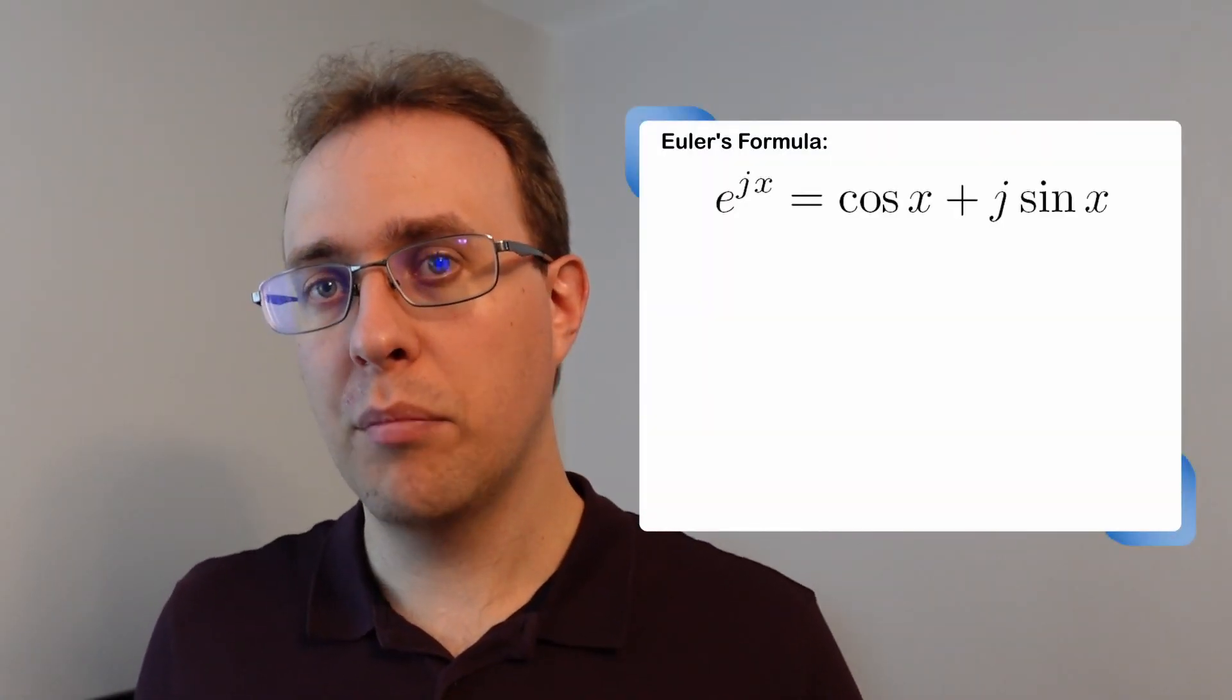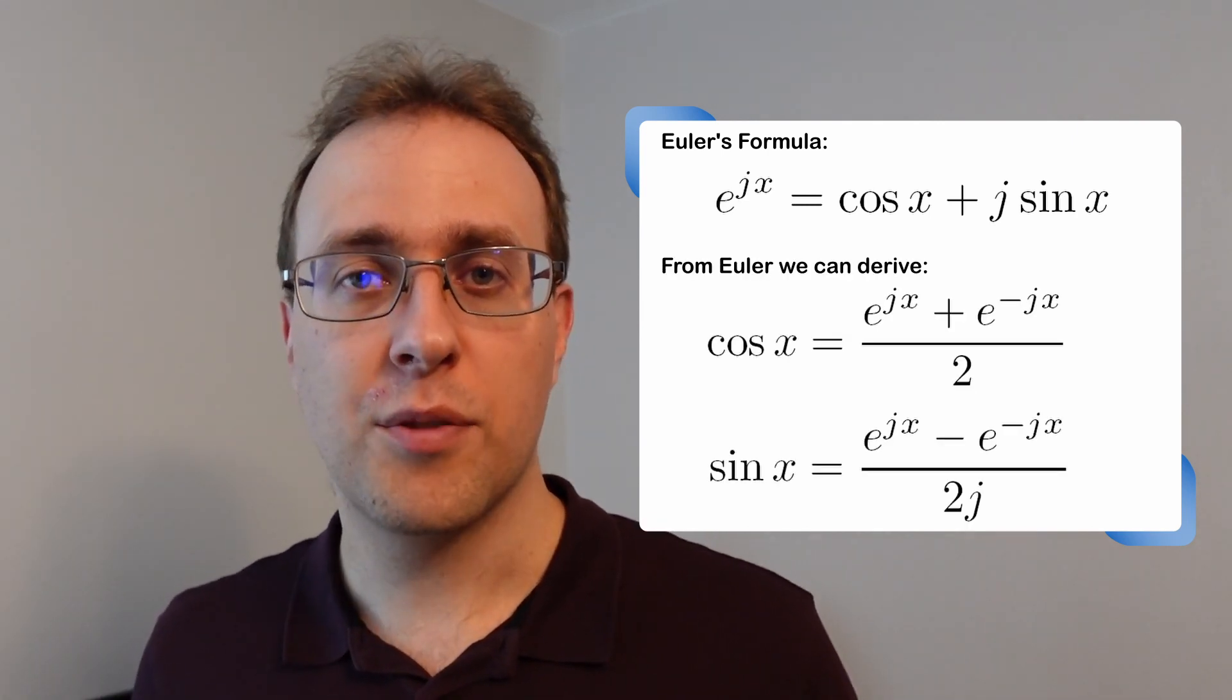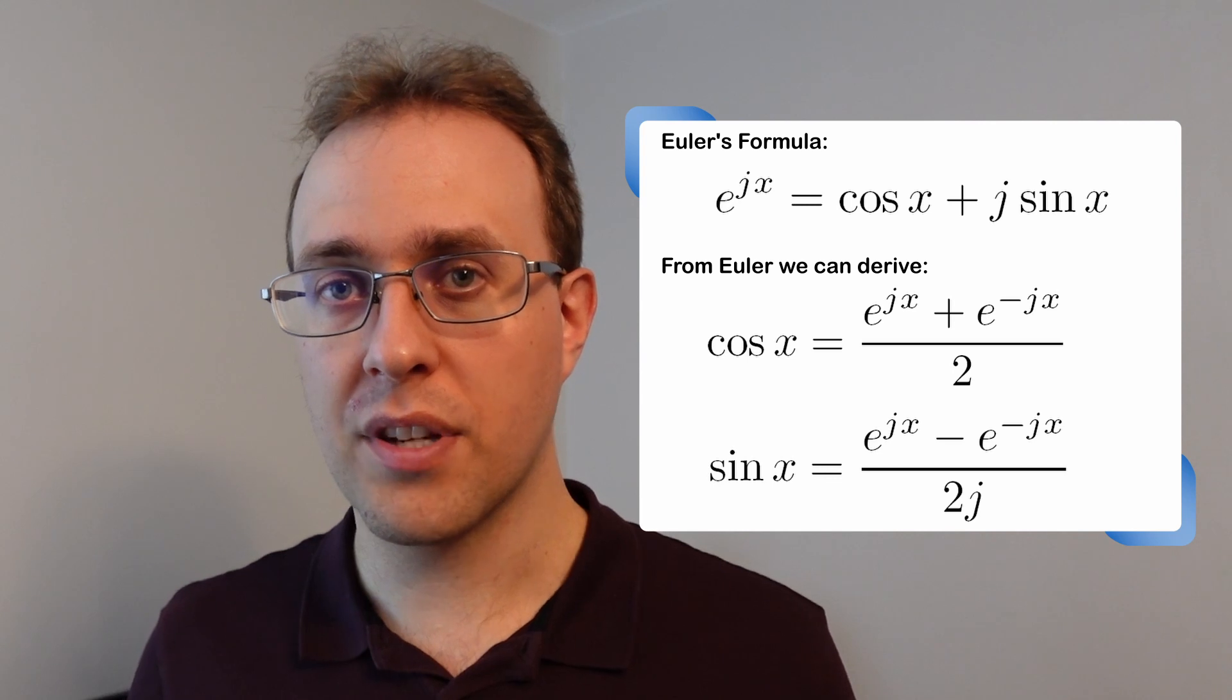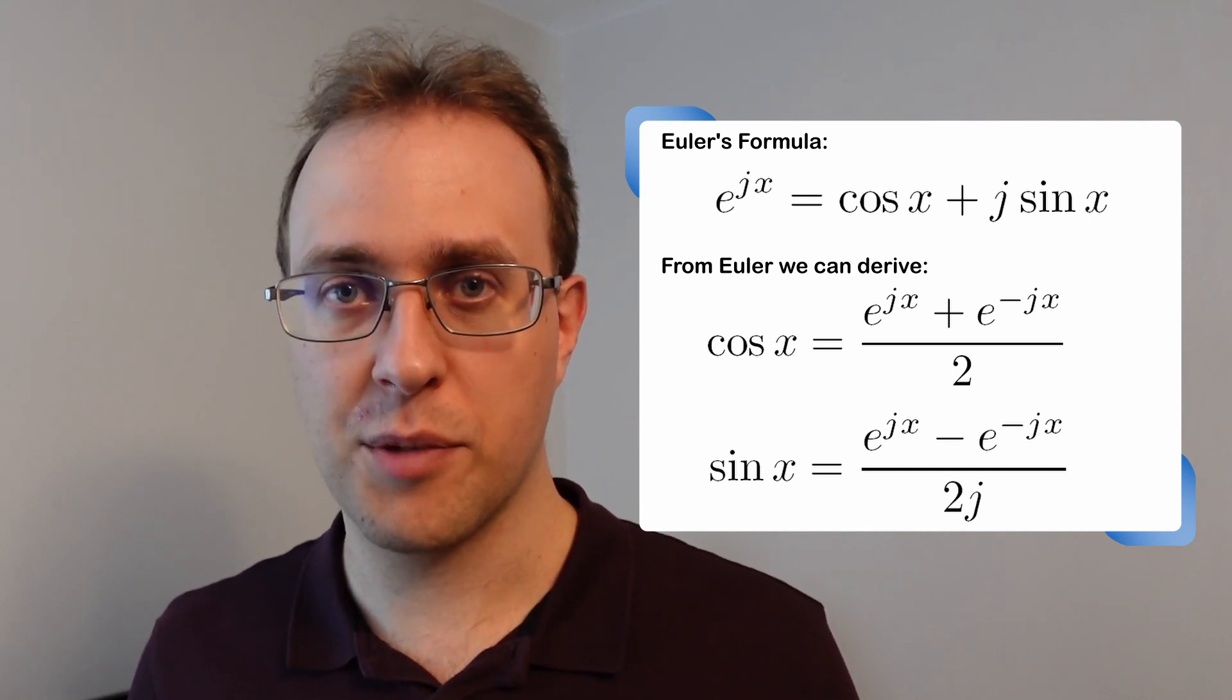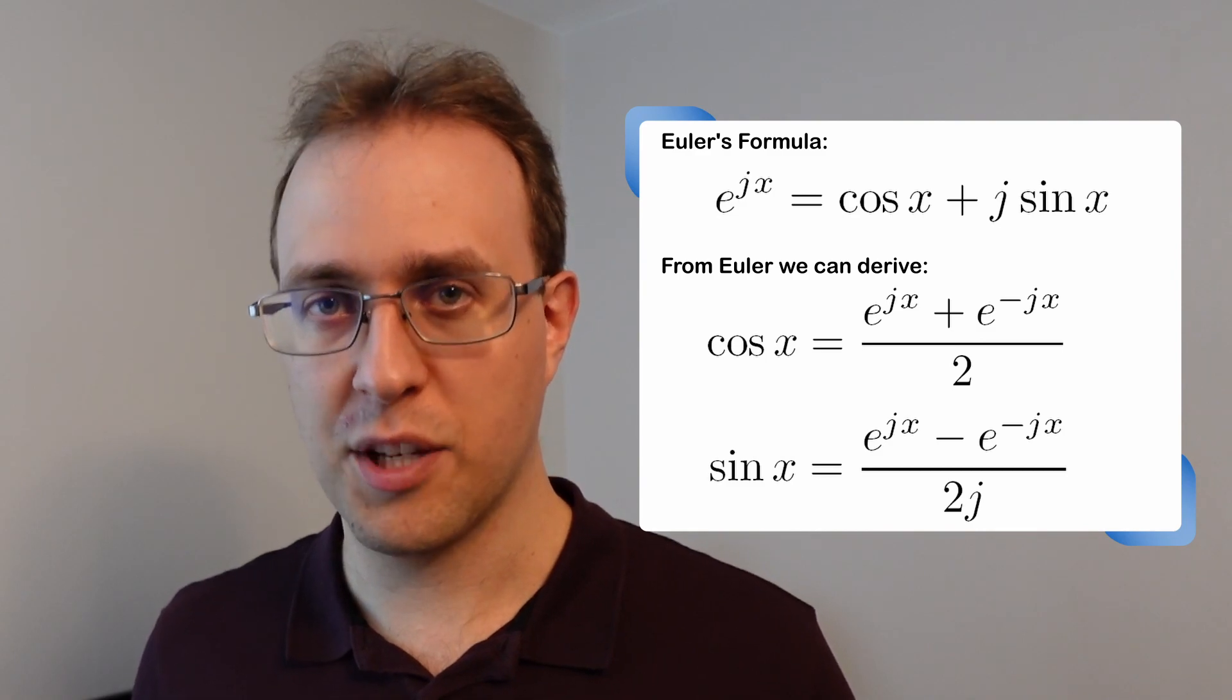Euler's formula lets us write a complex exponential as a sum of two trigonometric functions. Likewise, we can use Euler's formula to write a cosine as a sum of two conjugate exponentials and imaginary sine as the difference between two conjugate exponentials.